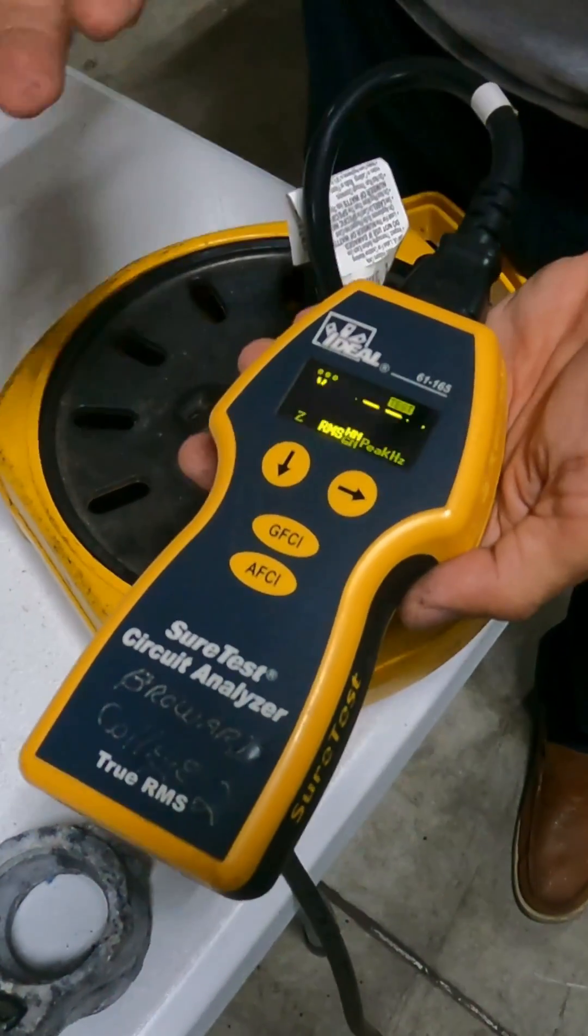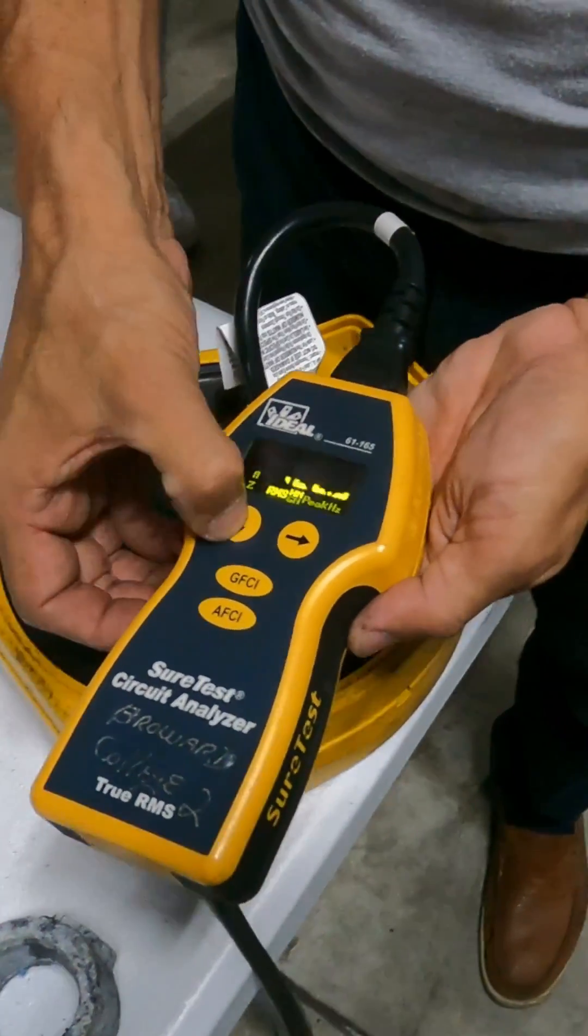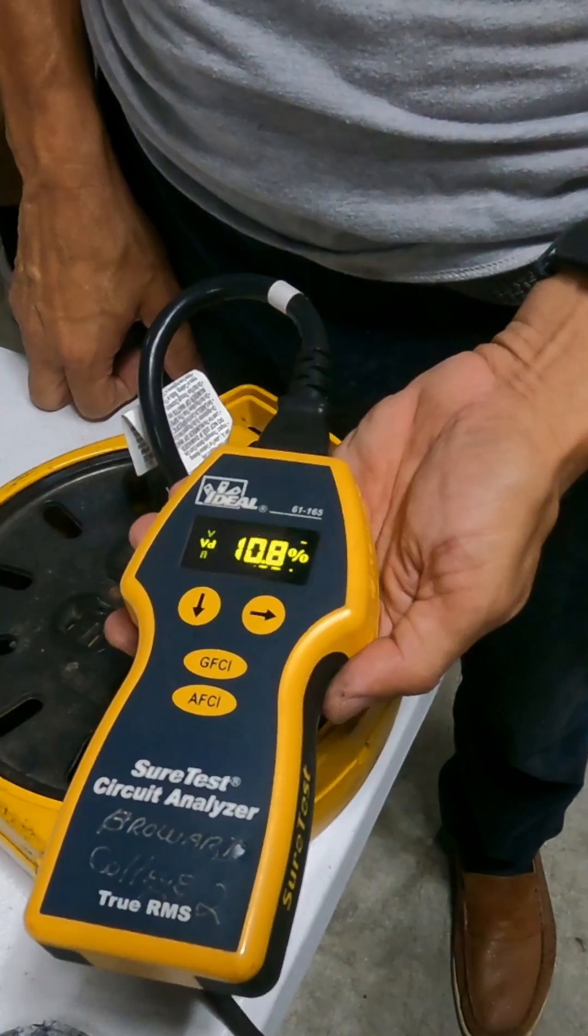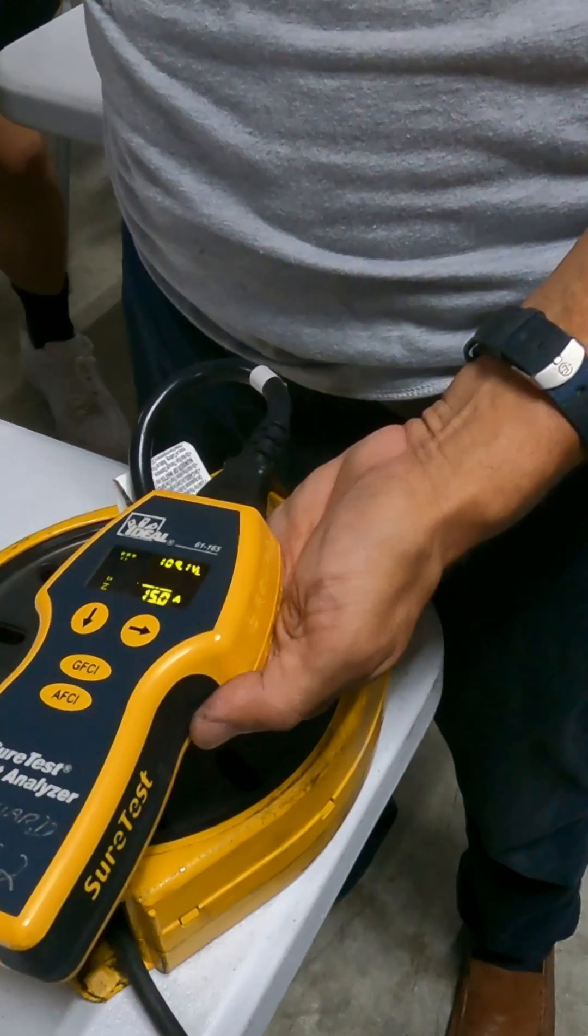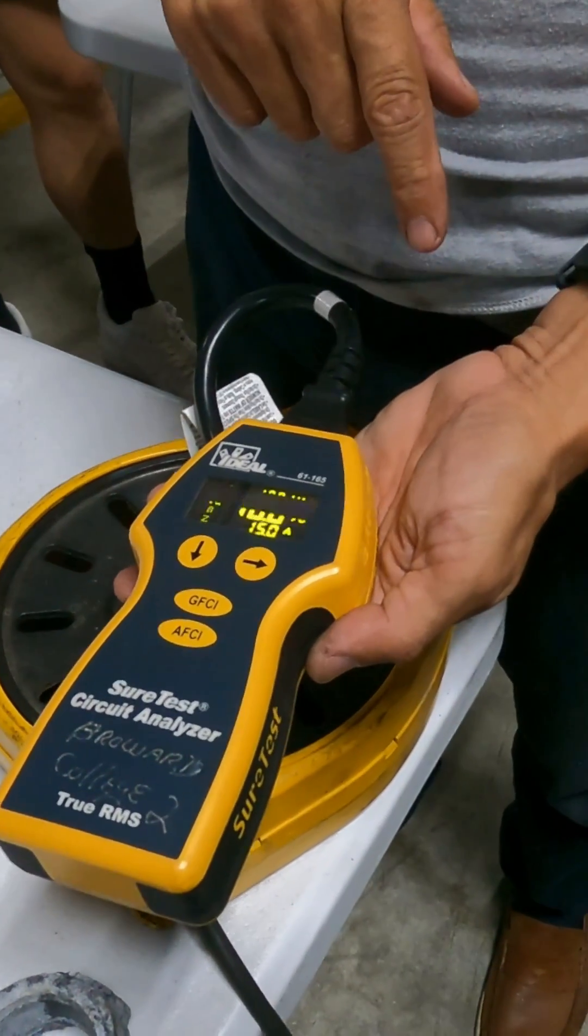We are going to check voltage - voltage is good - but voltage drop is 10.8 percent. You know, a lot of cable, a lot of wire. It went from 1.2 up to 10.8. That's a lot, no?